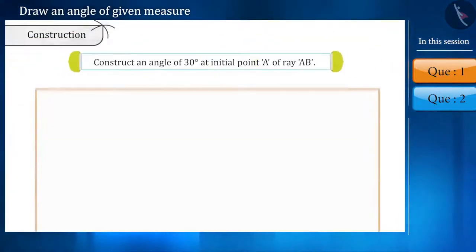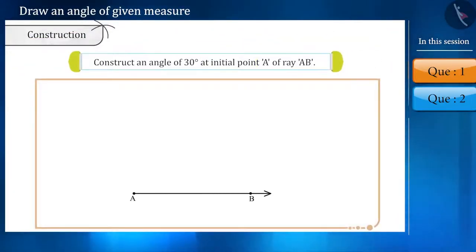The question is that, from the initial point of the ray AB, construct an angle of 30 degrees. Friends, we only have been given a ray AB. Now let us draw ray AB.